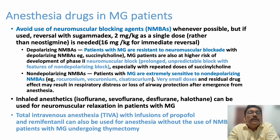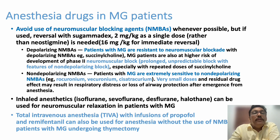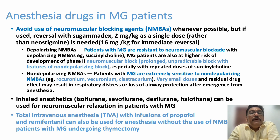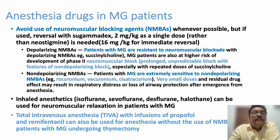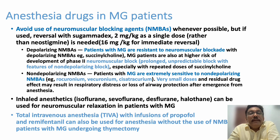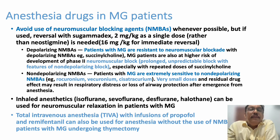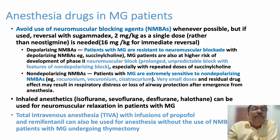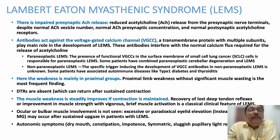If neuromuscular blockade is absolutely necessary in an emergency, reversal agents and depolarizing agents like succinylcholine should be available. Patients with myasthenia gravis are resistant to depolarizing neuromuscular blocking agents like succinylcholine, but they are extremely sensitive to non-depolarizing agents like vecuronium and atracurium — very small doses are required. We must be very careful when intubating these patients.